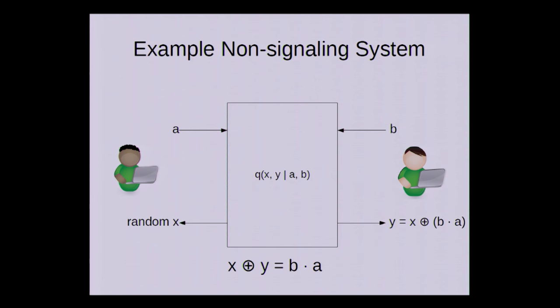So the box is non-signaling. However, if we XOR the two outputs, we always get b times a. So if you recall, that's exactly the acceptance condition of the scheme we just saw. So if the dishonest provers have a box like this, they can always break that scheme.